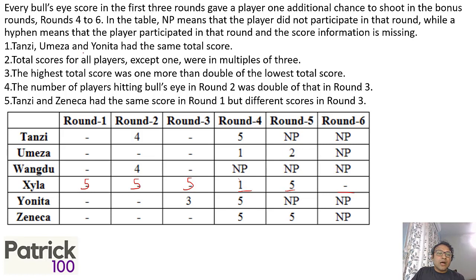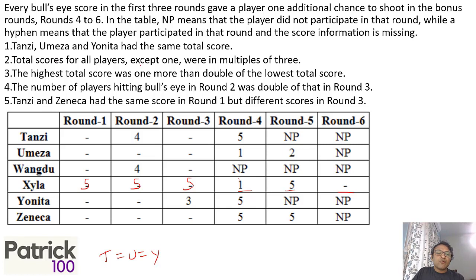Tanzi, Umiza, and Yonita have the same total score. So we say T equals U equals Y. Total scores of all players except one were multiples of 3, so T, U, Y were multiples of 3.